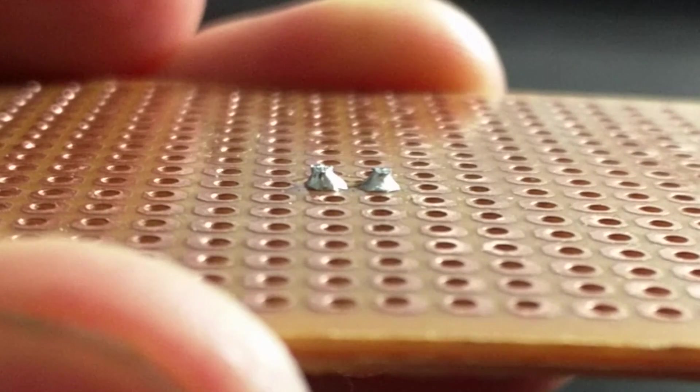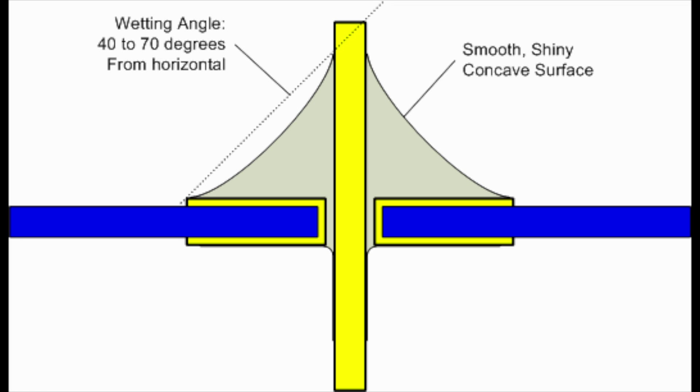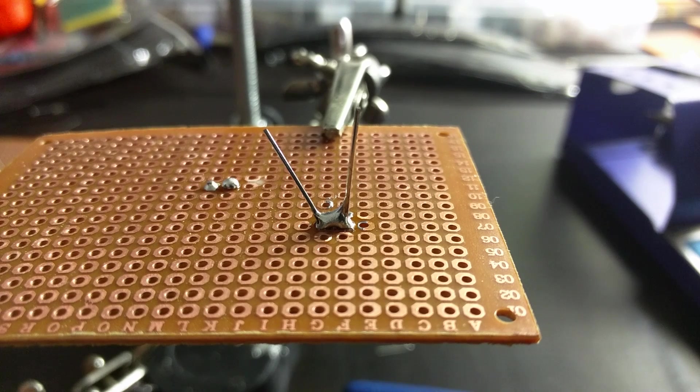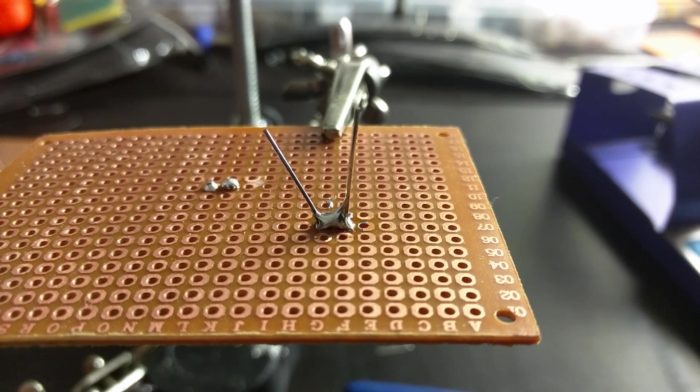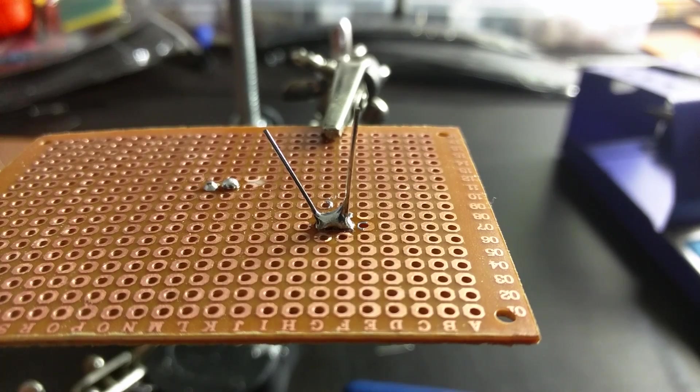A good solder joint looks like this, creating a nice concave shape. You can see what has happened here. I've used way too much solder and the solder has actually melted and made contact with the other side of the LED. This is not a good joint.